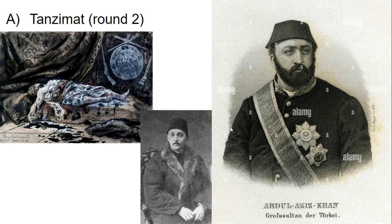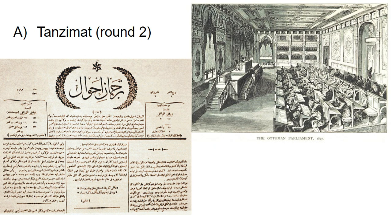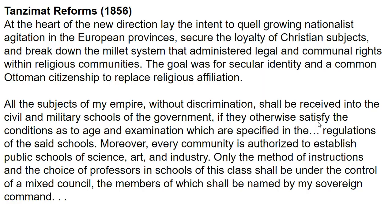More reforms, more attempts to change things, more attempts to move forward and modernize. In this next round of potential reforms they're going to create, for example, a legislature in order to give the people more representation. They're going to try to create a written constitution in order to bring constitutional government to the Ottoman Empire and modernize it even more. There are going to be more attempts to graft European political and economic systems onto the existing Ottoman Empire.